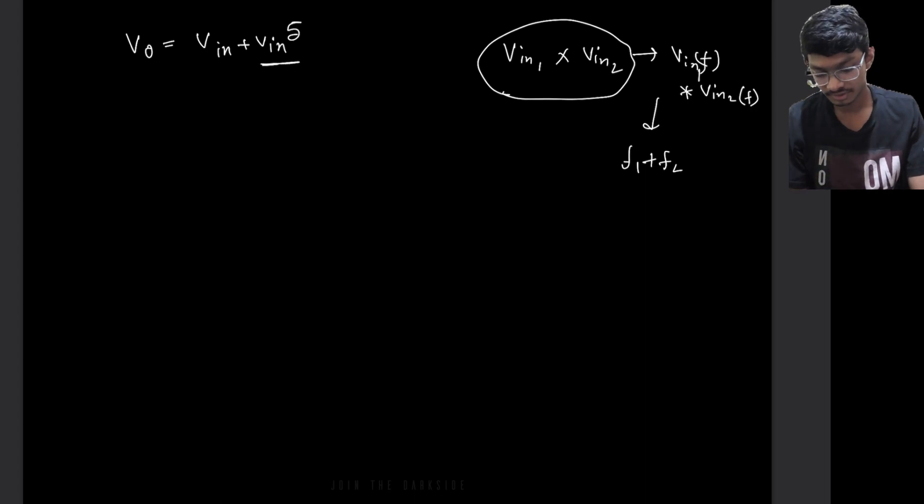So in this case, the frequency component of this Vin to the power 5 thing will be 5 times F. So the harmonic will be at 5F frequency of the fundamental frequency.